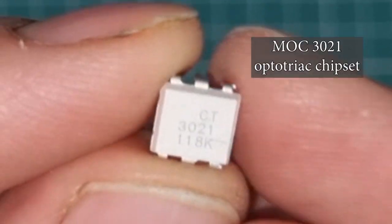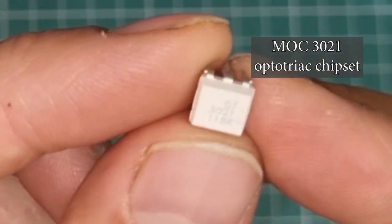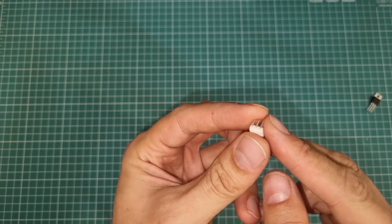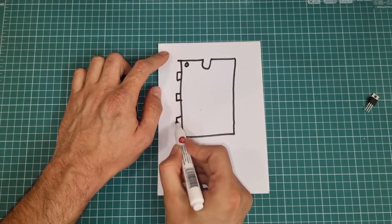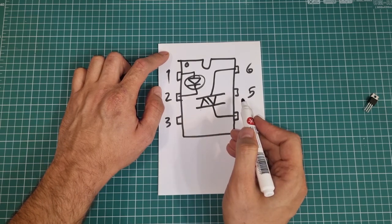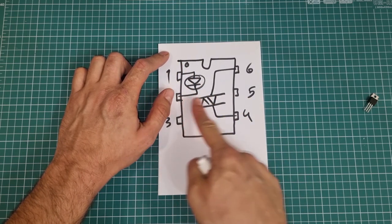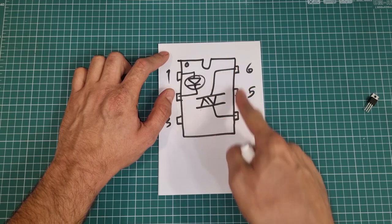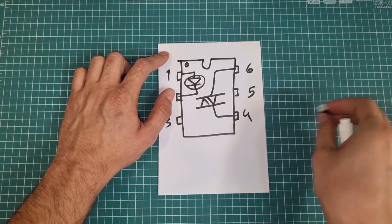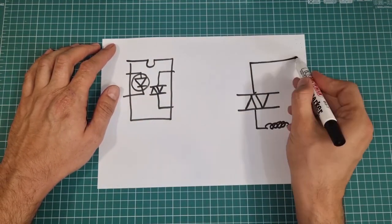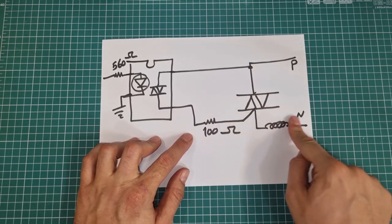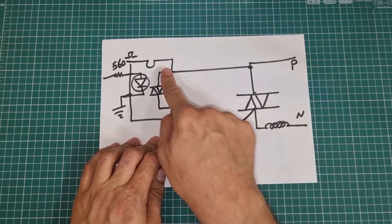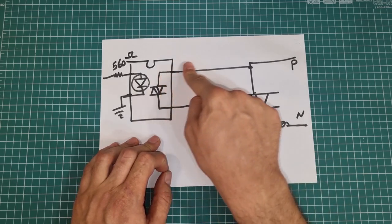This is MOC3021 optocoupler, an opto-triac. Inside this tiny chipset, there is an LED and a small triac. Look at this. We can turn the LED on to trigger this tiny triac. And then use the tiny triac for triggering the main triac, here like this. Phase and neutral are connected here, and the triac is connected with light bulb in series. The small triac triggers the main triac gate by connecting it to phase.